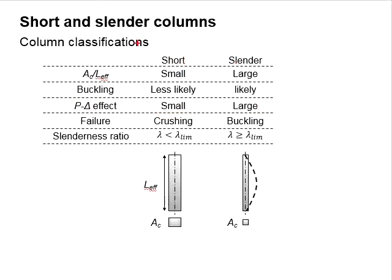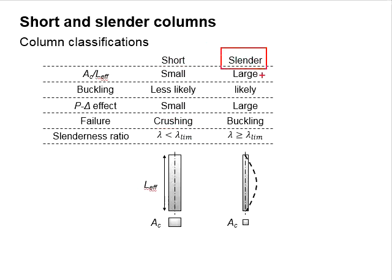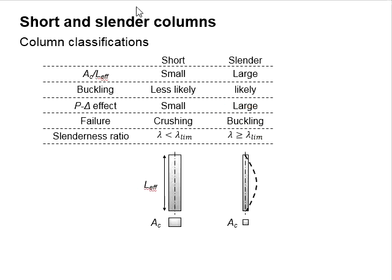A short column normally fails by crushing, while the slender column normally fails by buckling. The buckling response normally will degrade the resistance of the column under actual load.